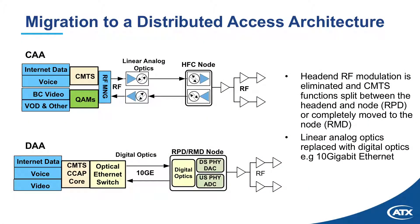When we migrate from a central access architecture to a distributed access architecture, we're separating the functionality of the CMTS and moving the RF modulation out of the current head-end and putting it at the edge of the network in the remote PHY or remote MAC and PHY node. So we're either keeping the MAC and separating the PHY layer, or moving the entire MAC and PHY out into the field, and transitioning to a complete digital transport solution, all being 10 gigabit Ethernet today.